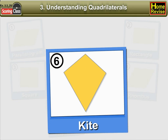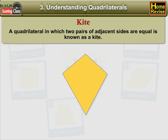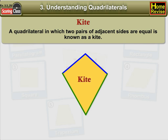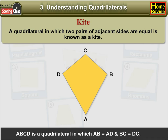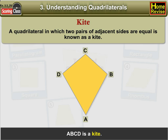6. Kite. A quadrilateral in which two pairs of adjacent sides are equal is known as a kite. In the figure, ABCD is a quadrilateral in which AB is equal to AD and BC is equal to DC. Therefore, ABCD is a kite.